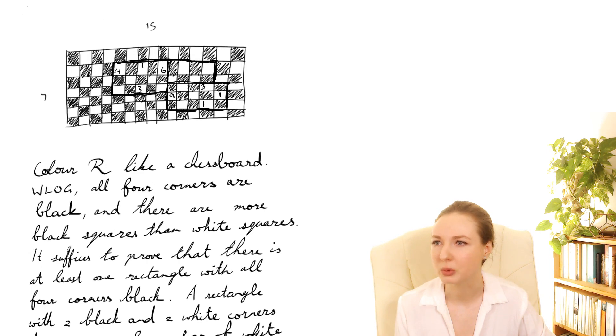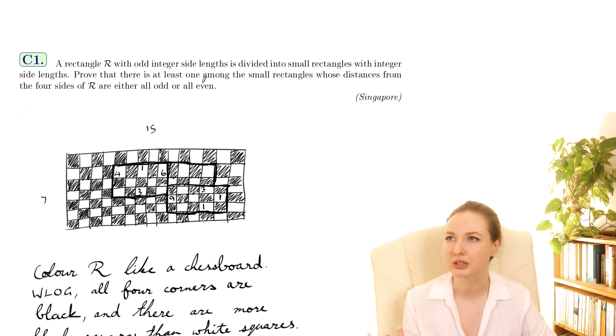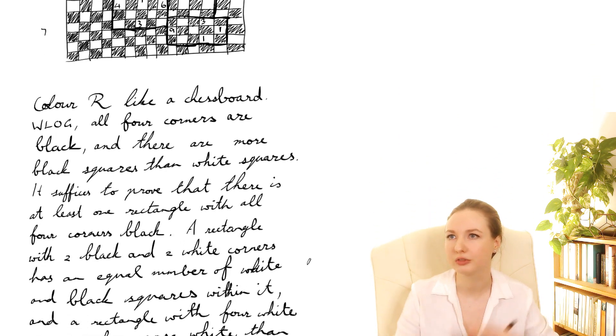Okay, I wasn't too happy with this sentence here though. I just sort of glossed over the idea that a rectangle with all four black corners would satisfy this condition, would have either all odd or all even distances. So I feel like this is the kind of thing where if I was actually doing the Olympiad I would probably write all that out and then resolve to come back and flesh out that idea in more detail if I had time at the end.